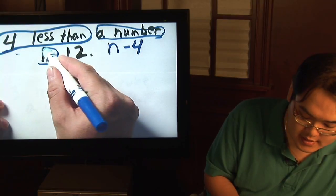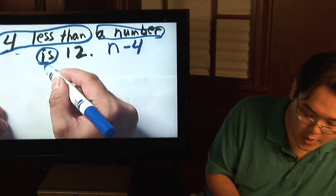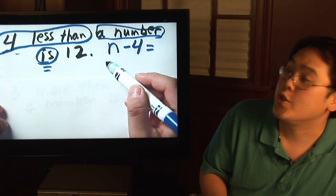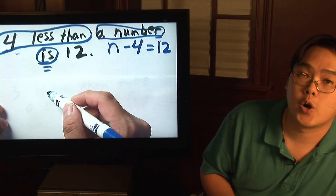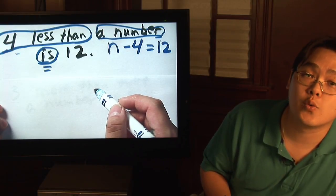Now the is, the is is always guaranteed, always going to be the word for equal sign. So equal to, and then you have twelve. The number after the is is always going to be the number on the other side. And as you can tell, this equation is a very easy one to solve.